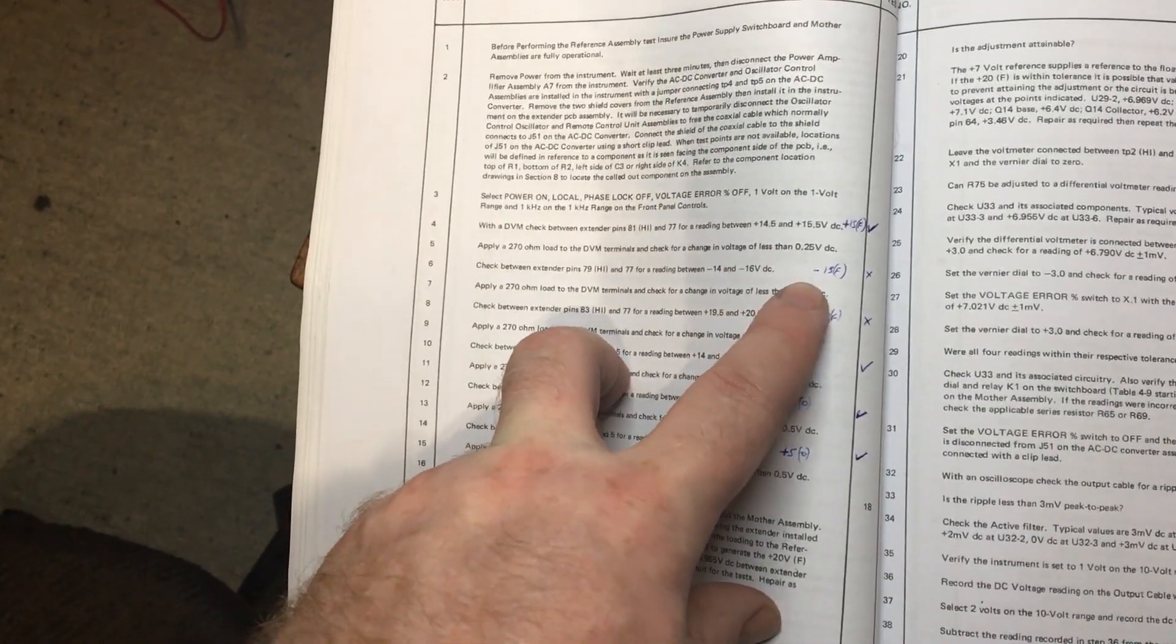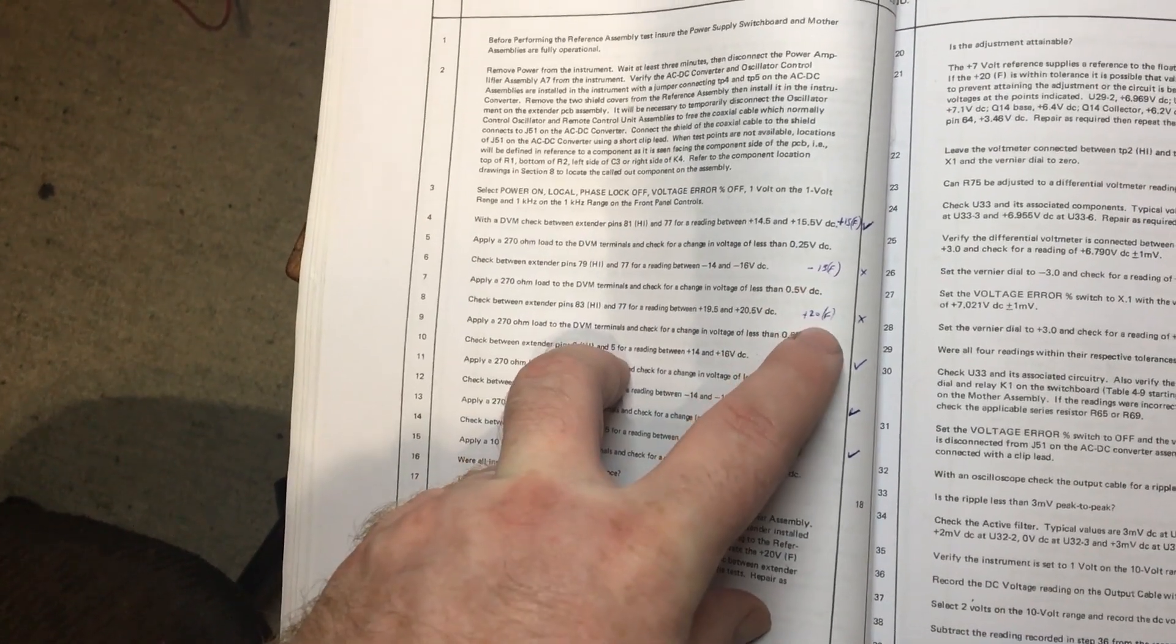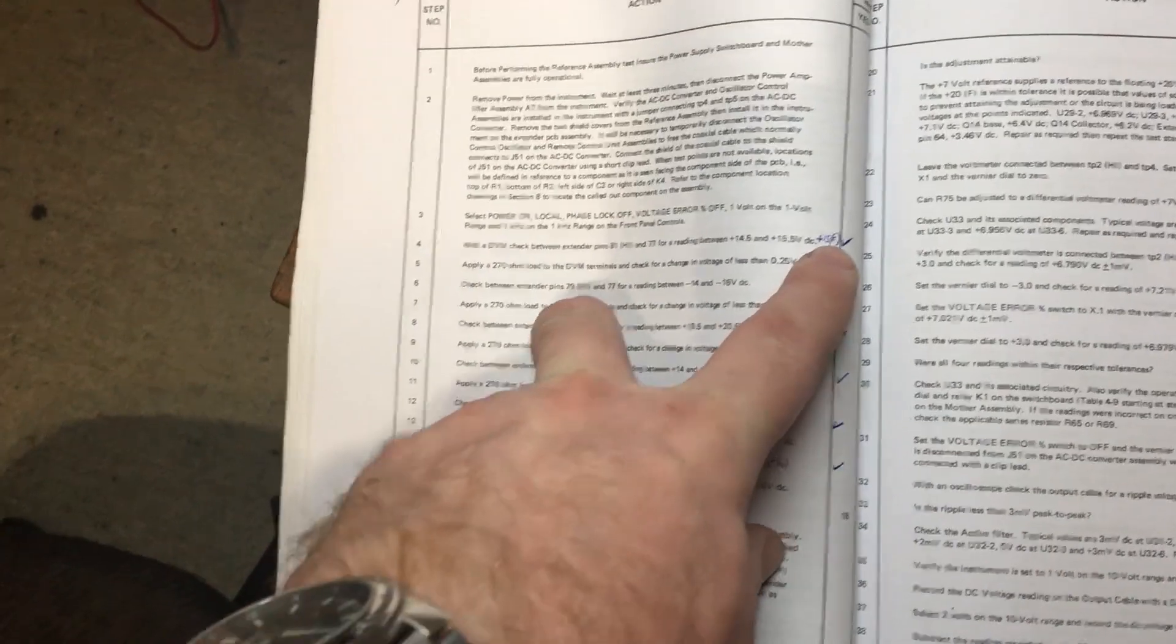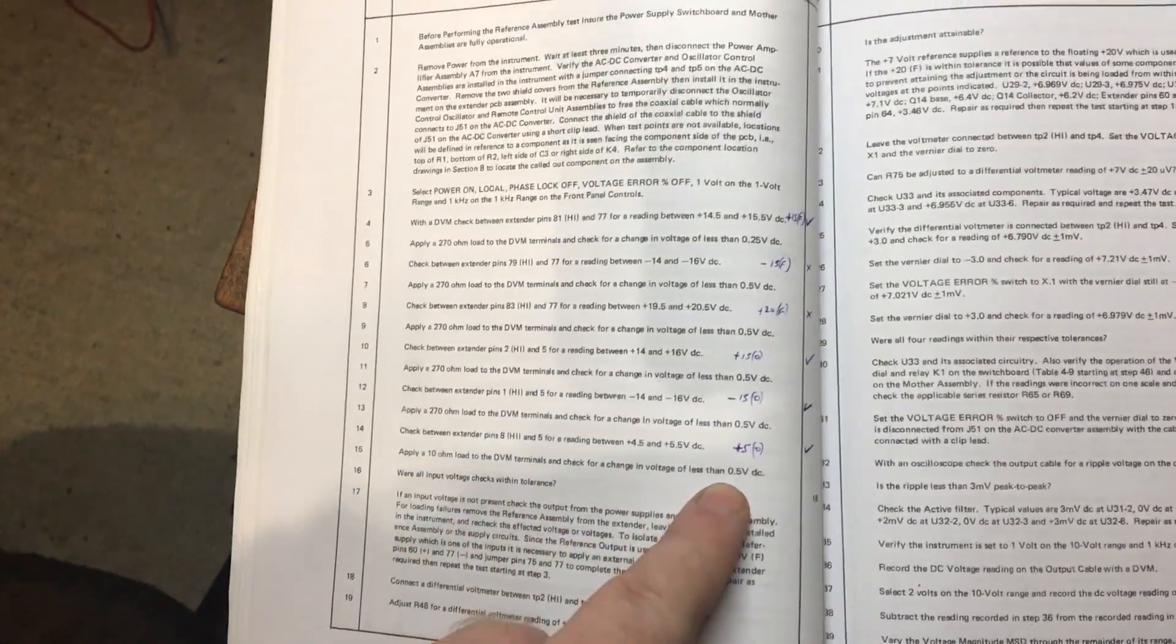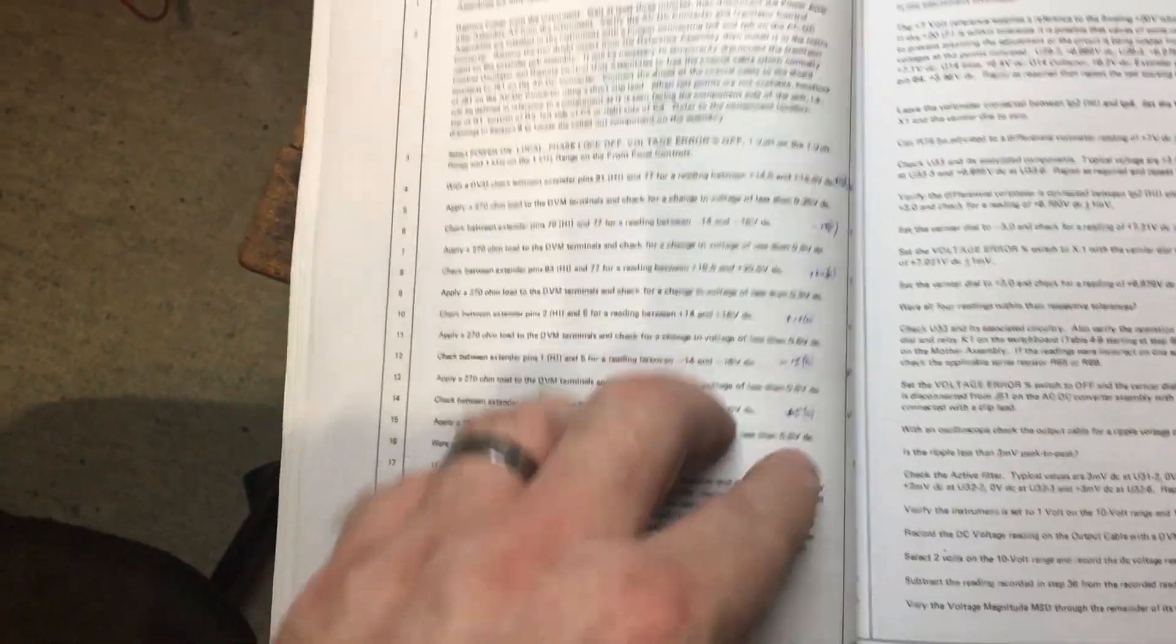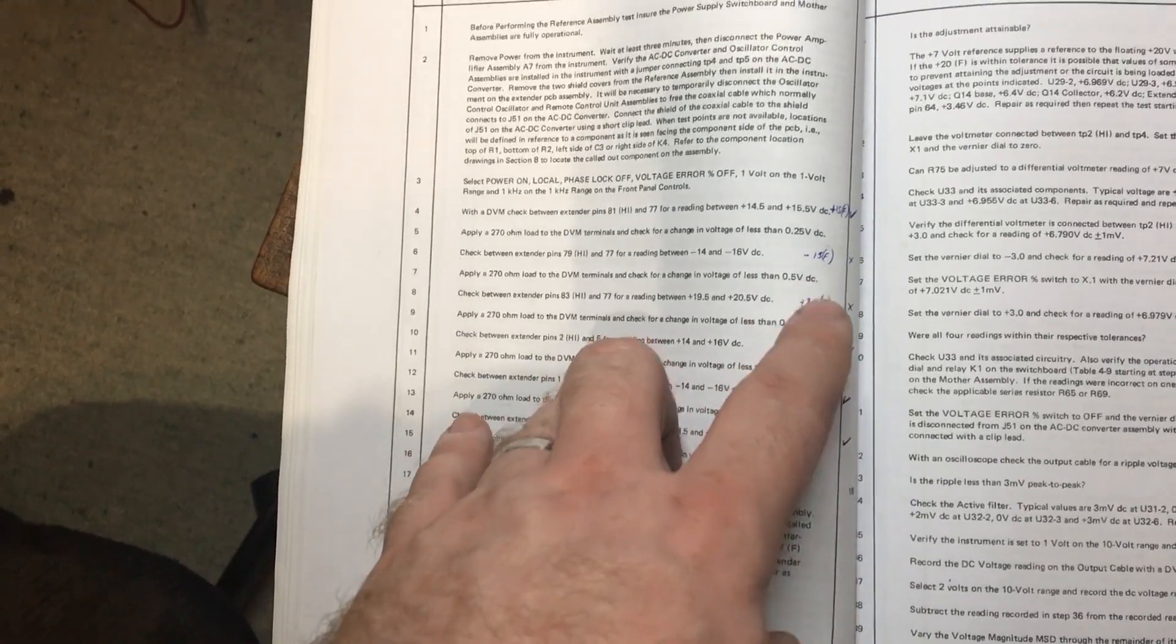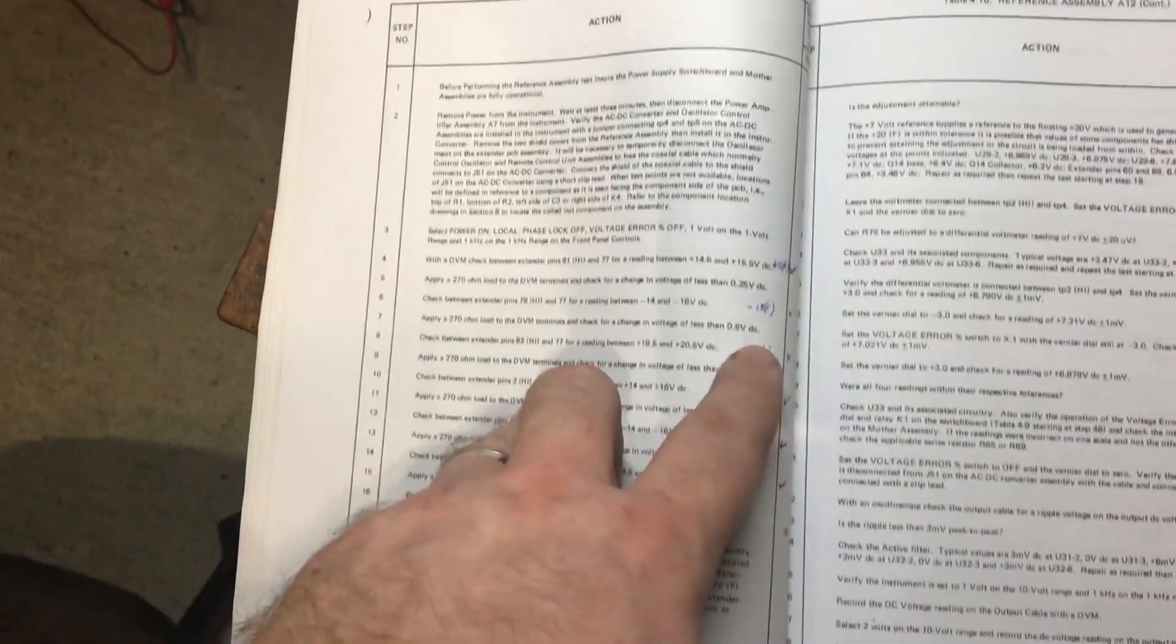What I was missing is the minus 15 volt in the floating, and the plus 20 volts in the floating. The plus 15 is there, and so are the other voltages. So that minus 15 and plus 20 are the ones which are missing from the same circuitry.